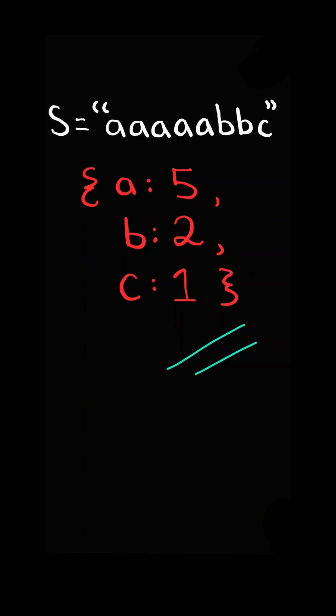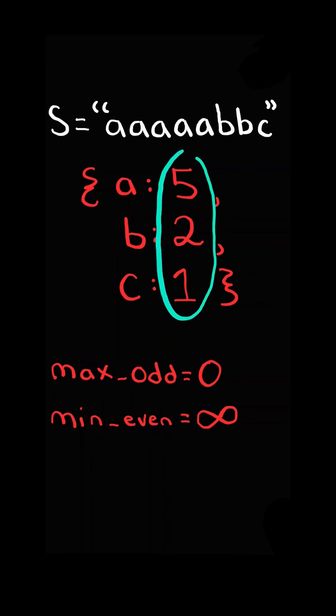First, we will create a frequency map, counting the frequency of each letter. Then we will have two variables, max odd set to 0, and min even set to infinity. Then iterate through the frequency map.